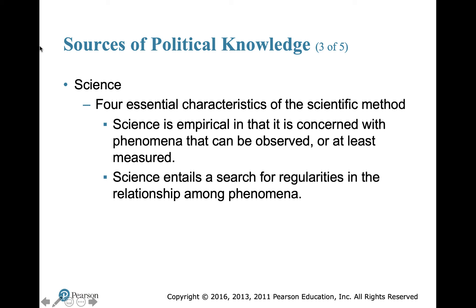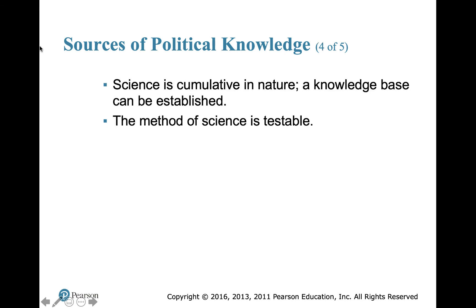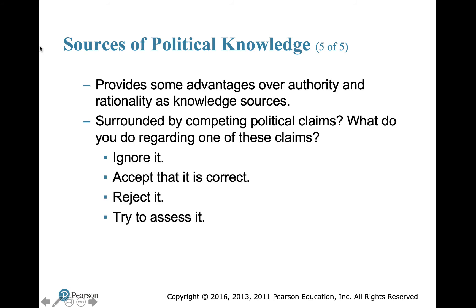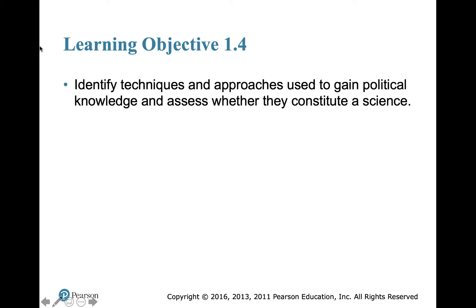Science has four essential characteristics applicable to politics. Science is empirical — concerned with phenomena that can be observed or measured. It entails the search for regularities in relationships among phenomena. The scientific method is testable: you take a hypothesis, test it, run data, and come to a conclusion. When facing competing political claims, you can ignore them, accept them, reject them, or try to reassess them — similar to what we do with the scientific method.